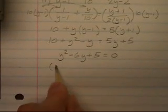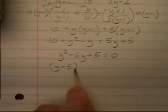This factors, that was nice. That's y minus 5 times y minus 1 is equal to 0. Setting each factor equal to 0, y is equal to 5 or 1.